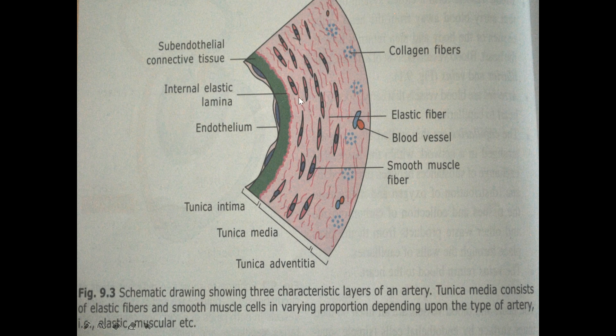The middle layer, tunica media, consists of concentric layers of spirally oriented smooth muscle. These smooth muscles show elongated nuclei. Apart from vasoconstriction, smooth muscles produce elastic fibers, collagen fibers, and ground substance (proteoglycans). Elastic fibers are present as fenestrated sheets. Tunica media of arteries is thicker and contains more smooth muscle than veins. The external elastic lamina separates tunica media from tunica adventitia and is thinner than the internal elastic lamina. Tunica media does not contain fibroblasts.